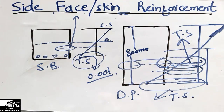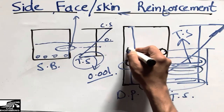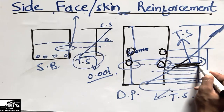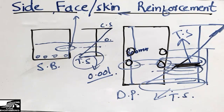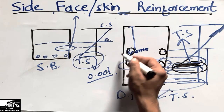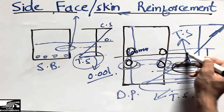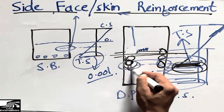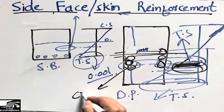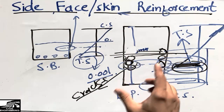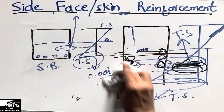We place reinforcement at the sides of the beam so that the tensile strain does not exceed the limit. This prevents cracks from occurring at the mid-portion of the sides of the beam. The strain develops in this middle region, so we place the side reinforcement below the mid-depth to avoid cracks in the deep beam.